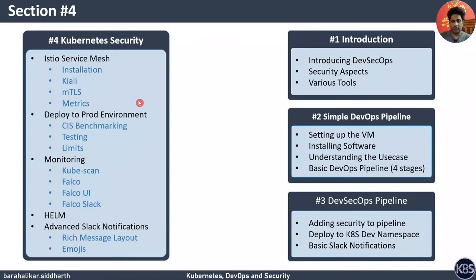Majority of section four is about Kubernetes security. We will address a few security concepts and then promote the application from a dev namespace to a production namespace with added security. We will also monitor the cluster using tools like Falco and kubescan, and we will use Istio to secure how the pods communicate with each other. We will end this section by creating a custom Slack application to send content-rich messages from Jenkins.